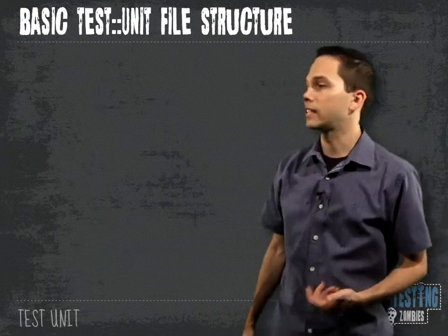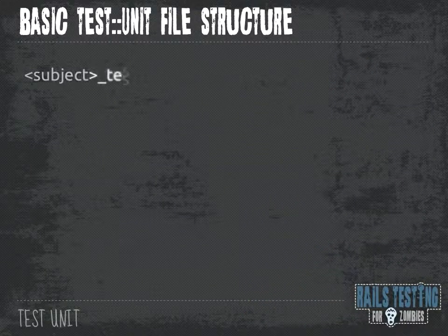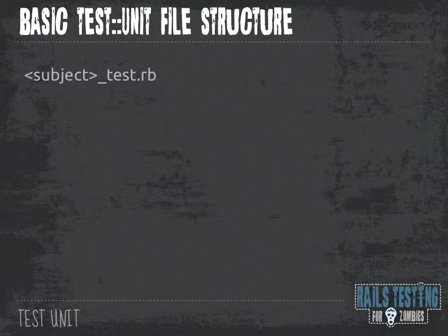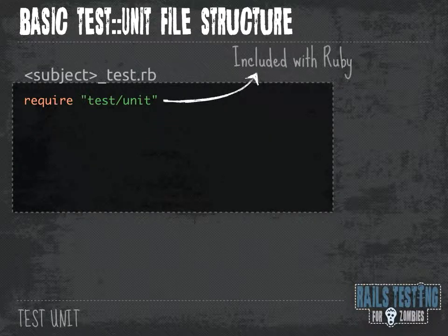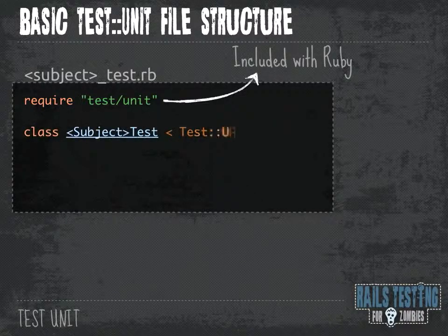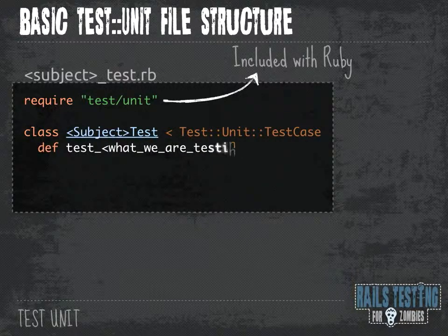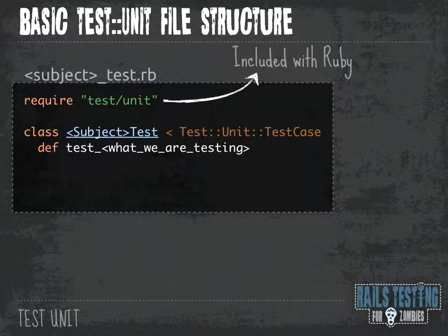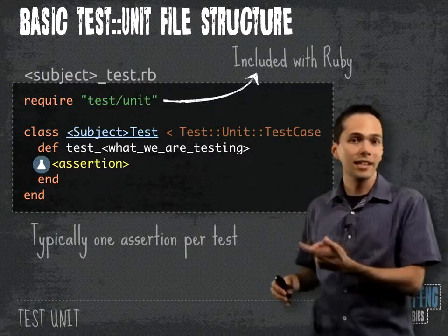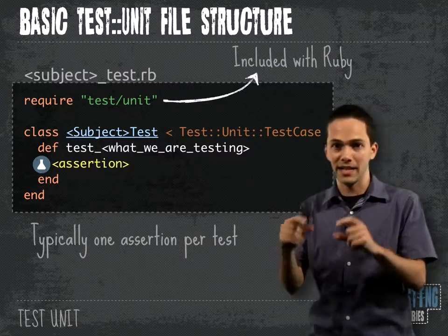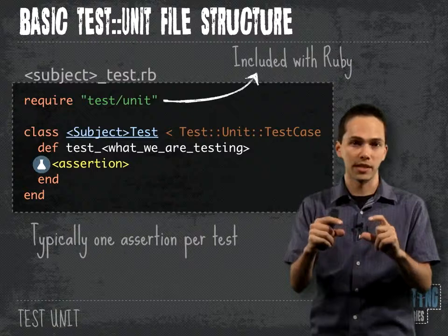Let's take a look at the basic structure of a test unit file. The name of the file is probably going to be the subject you want to test, underscore test.rb. Inside that file, you're going to require the test unit library. The test unit library gets included with Ruby by default — it's not a gem you have to install. Inside the test file, we declare a class that has the subject capitalized and then the word test, which inherits from test unit test case. We then write a bunch of methods which are each of our tests. The basic building block is going to be an assertion — this is what we are asserting to be true or asserting to match. Each test typically has one assertion; that's a best practice.